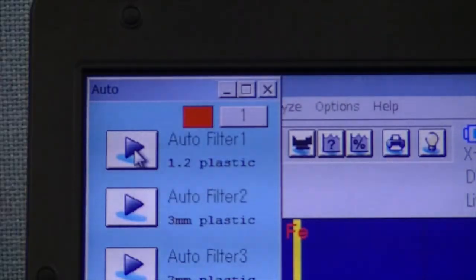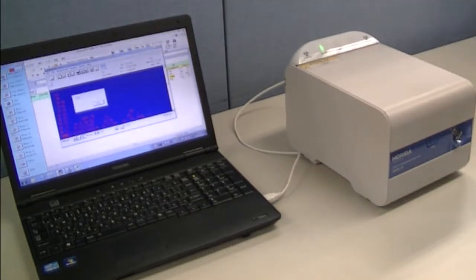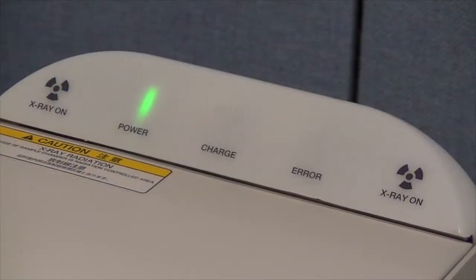Just click the button of your choice for the measurement. The best condition is automatically selected according to your requirements. When the measurement starts, the red lamp shows you that x-rays are being emitted inside the instrument.